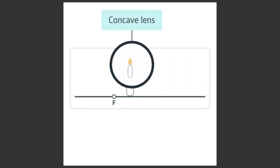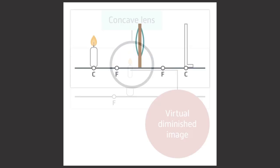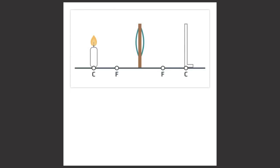Similarly, investigating a concave lens would also give you a virtual image, but this time it would be diminished. Another investigation you could carry out would be to set up a convex lens to get an image on a screen.